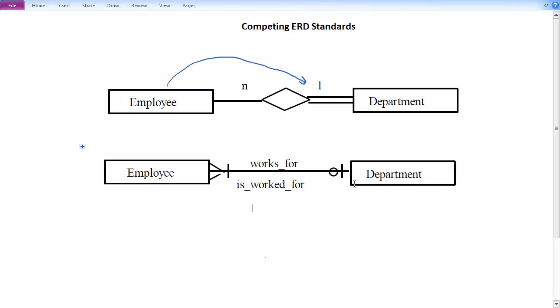A given department can be worked for by at least at a minimum one and up to many because of this little three crow foot thing, employees. So a department can have between one and many employees and an employee can have between zero and one departments. Nice logic, not as powerful. Let's look at one other that you may see from time to time.